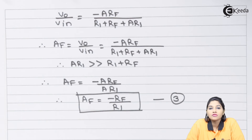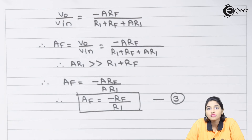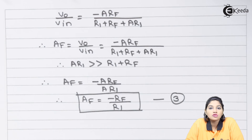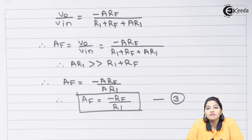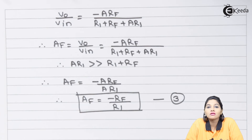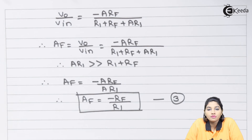By properly setting R_f and R1, we can easily control the closed loop gain of the op-amp. The ratio R_f/R1 can be adjusted so that the gain is below unity as well. Because of this property, the inverting amplifier finds many applications in linear integrated circuits. The gain in closed loop is also independent of the open loop gain. R_f is typically used as a potentiometer so that the gain can be easily adjusted to a desired value.